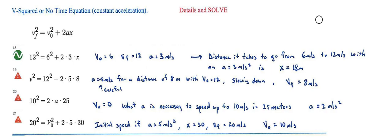The v squared or the no time equation. We're talking about the details and then solving them. The v squared equation is vf² equals v₀² plus 2ax. Again, x is really a delta x, and that plus can be a minus depending on speeding up or slowing down.